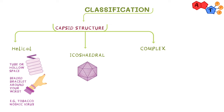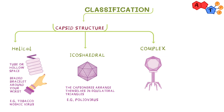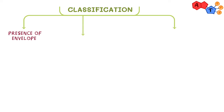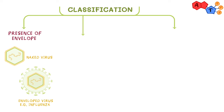The second capsid type is icosahedral, where the capsomeres arrange themselves in equilateral triangles that fuse together to form a 20-sided diamond. An example is poliovirus. And lastly, complex viruses, which are technically a combination of icosahedral and helical at the same time. The third classification is the presence of an envelope. Viruses that lack an envelope are called naked viruses, while viruses enclosed by the lipid bilayer are called enveloped viruses. An example of an enveloped virus is influenza.